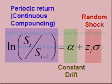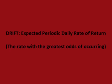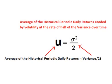Let's look at each of these. For the drift, we use the expected rate of return — the rate that we expect the price to change each day. The expected rate is the rate of change with the greatest odds of occurring. There are different theories of what this rate should be. However, for a standard Monte Carlo, we use a volatility-eroded historical mean of the periodic daily returns.